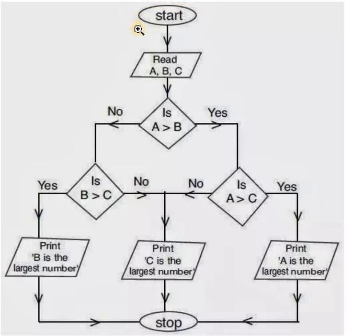First, this is the starting symbol, oval symbol. Then to go to the next step, this is the arrow mark. And then we have to read the three numbers, say A, B, and C. These are the three numbers we have to read within this parallelogram symbol.